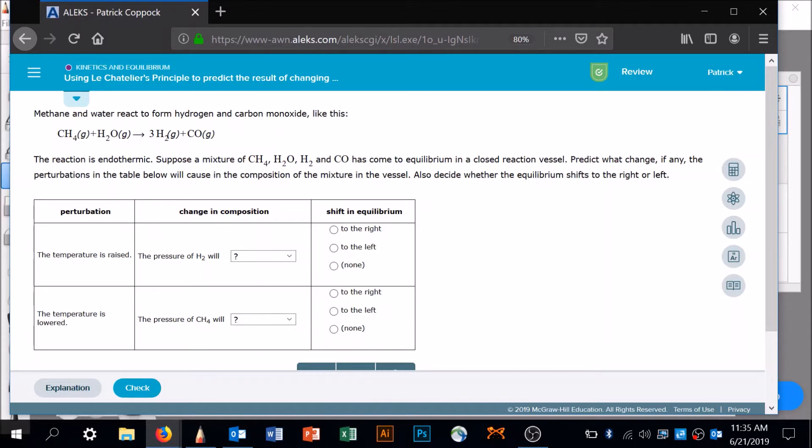Suppose a mixture of these things comes to equilibrium in a closed reaction vessel. We're starting at equilibrium. What change, if any, in the perturbations in the table below? If temperature's raised and it's endothermic, we've got heat over here. If temperature's raised, it's going to push things away from the heat. It's going to go to the right. What's that going to do to the pressure of H2? It's going to increase it.